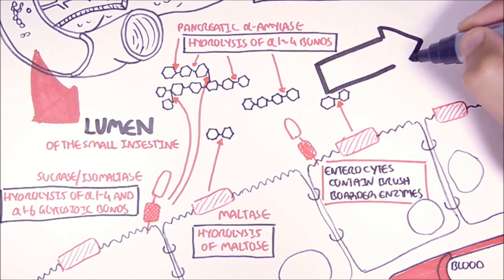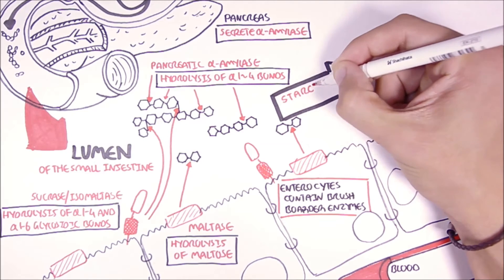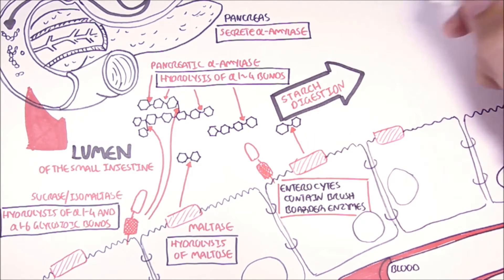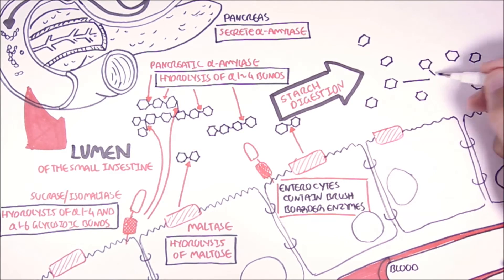Therefore, starch will encounter all these enzymes in the small intestine and will be digested. It will be broken down into their building blocks, which is glucose. So through starch digestion, we will end up with many glucose molecules.